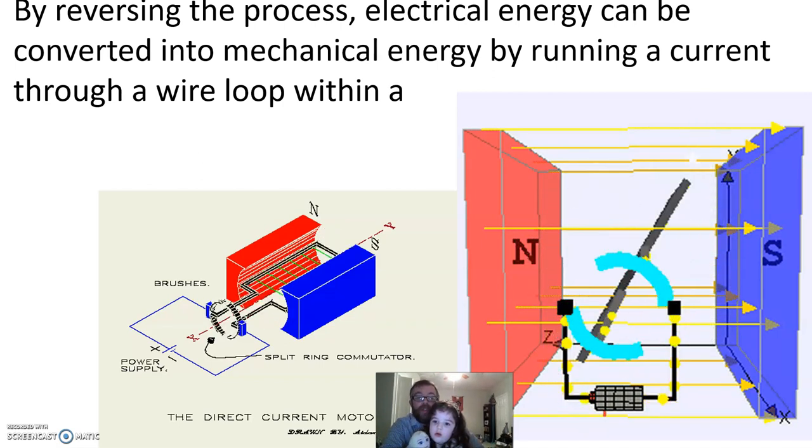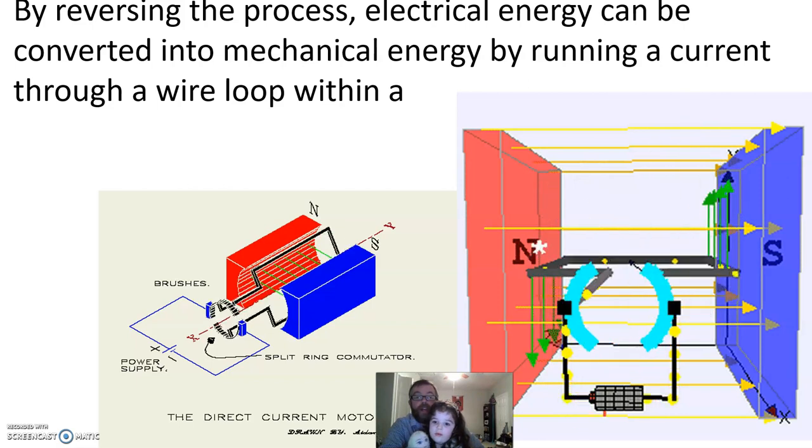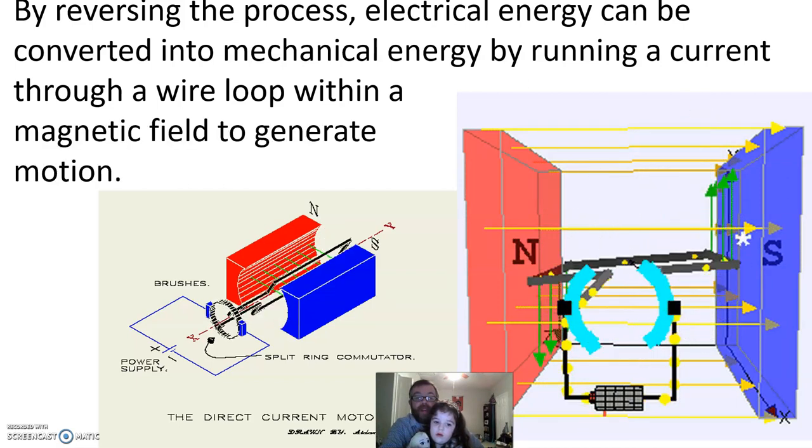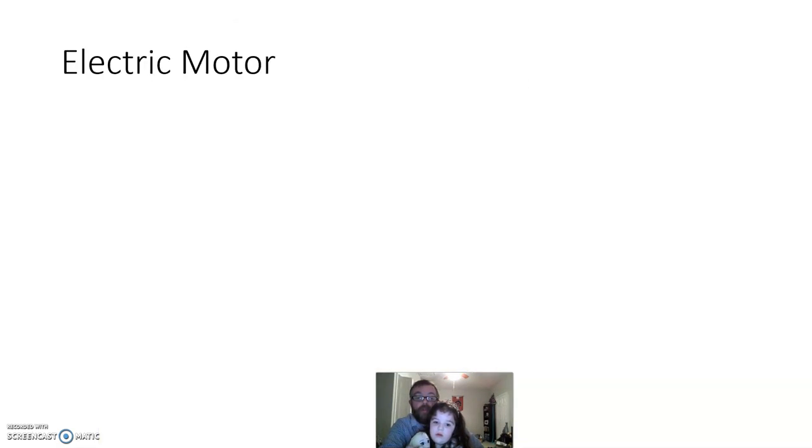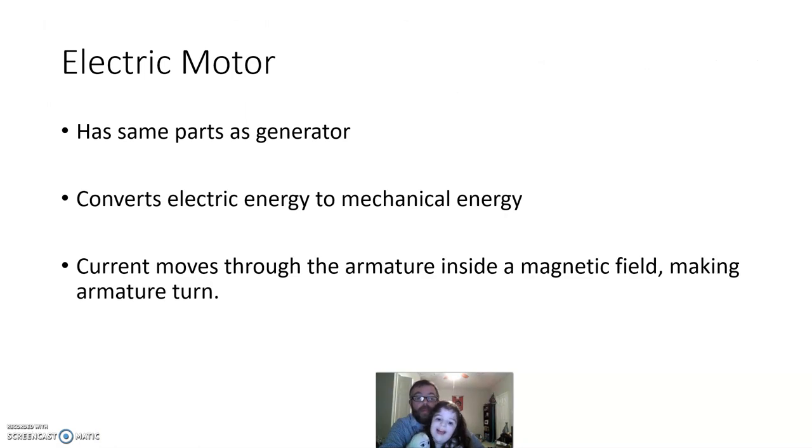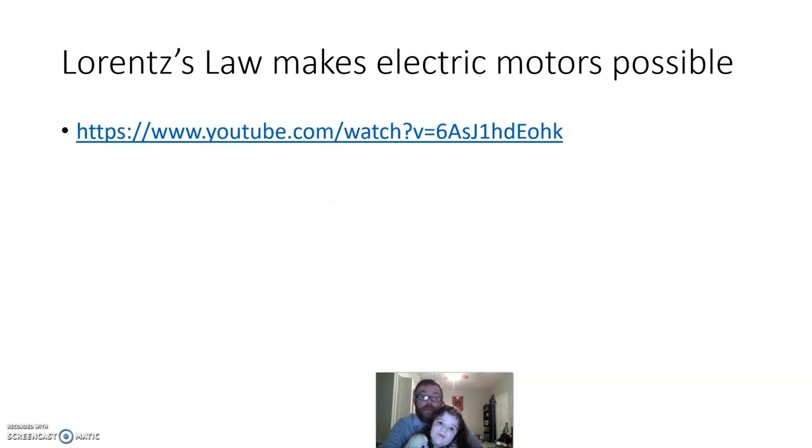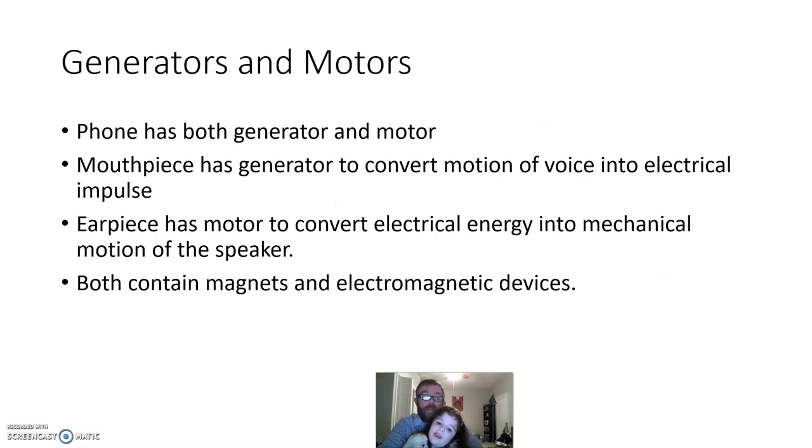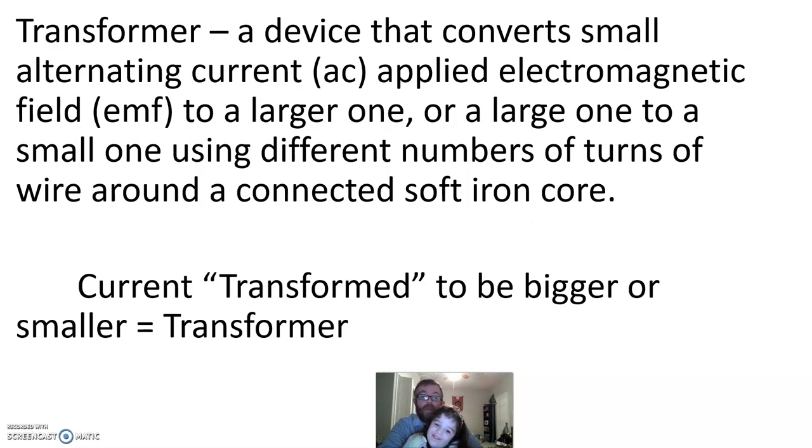So, electric energy is converted into mechanical energy by running a current through a wire loop within a magnetic field to generate motion. Hello. This is just a review of what we've just seen.